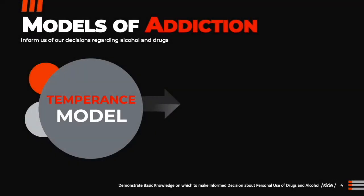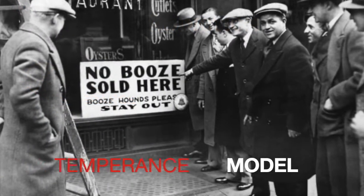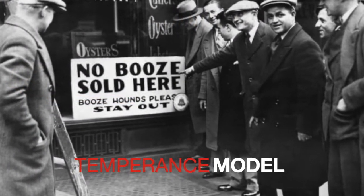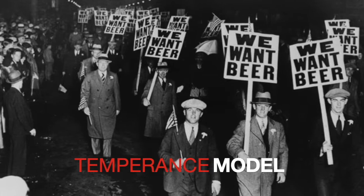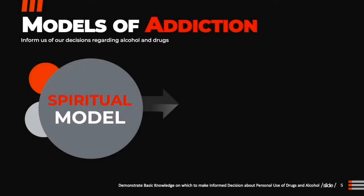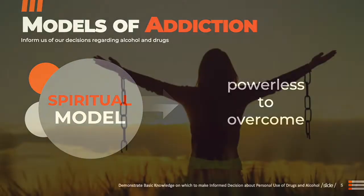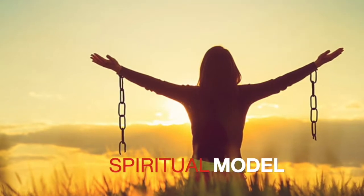The temperance model is based on the thought that alcohol is hazardous and harmful. This model was based on the movement that evolved into prohibition. It was proclaimed that alcohol could not be used by anyone safely. Abstinence was the only alternative. The spiritual model views a substance use disorder as a condition of which individuals are powerless to overcome, turning their life over to a higher power and following a spiritual path for their recovery.